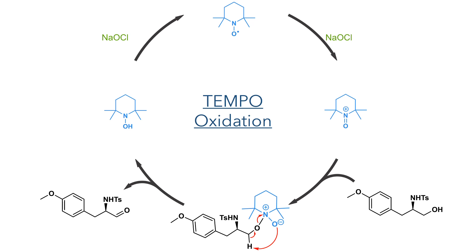This began with the oxidation of an alcohol derived from tyrosine. TEMPO, which is present in catalytic amounts, is first oxidised by sodium hypochlorite, forming an oxoammonium salt. This is attacked by the hydroxyl group, and a hydrogen atom can then be abstracted, forming the aldehyde. The resulting hydroxylamine is then oxidised by sodium hypochlorite, which is present in stoichiometric amounts, to reform TEMPO.